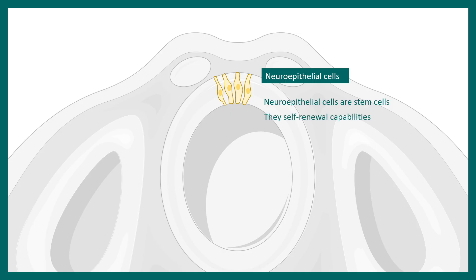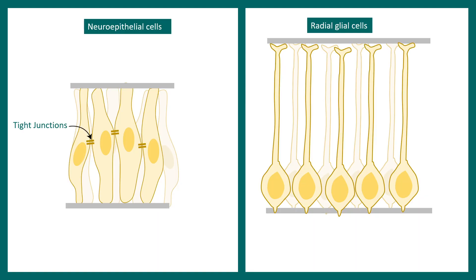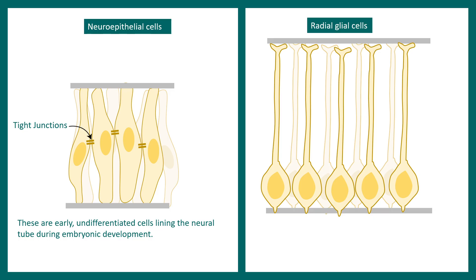These neuroepithelial cells are giving rise to neurons in a sequential fashion. Neuroepithelial cells are the precursors for radial glia — eventually neuroepithelial cells would change their shape, size, and adhesion properties to become radial glial cells. These neuroepithelial cells and radial glial cells look quite different, as the picture shows.